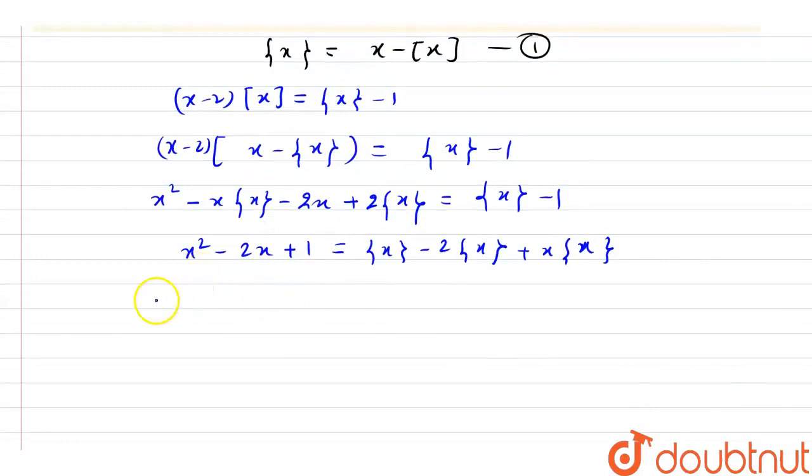Now if you solve it further, this is x minus 1 whole square formula. And here we have x into fractional part x minus fractional part x. Now if we take fractional part common, we have x minus 1, and here we have x minus 1 whole square.